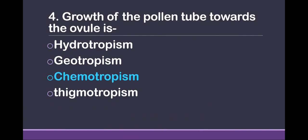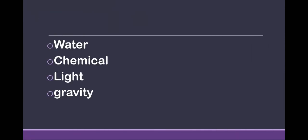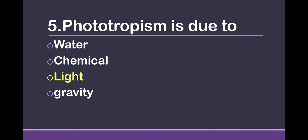Question 4: Growth of the pollen tube towards the ovule is — hydrotropism, geotropism, chemotropism, or thigmotropism? The answer is chemotropism. Yes, the growth of the pollen tube towards the ovule is a positive chemotropic response.